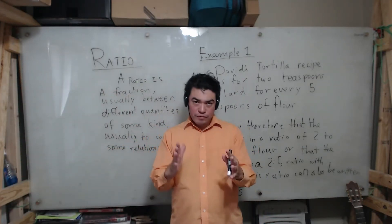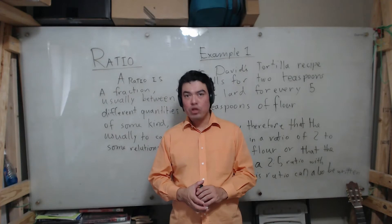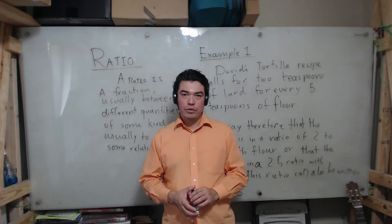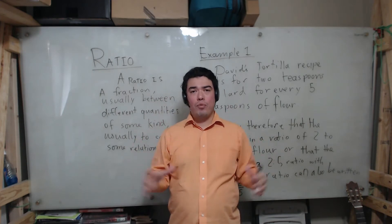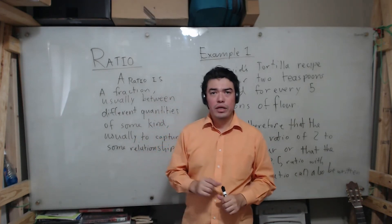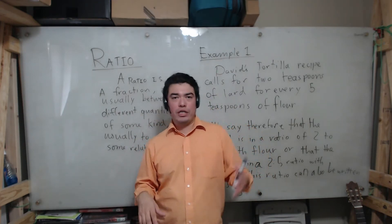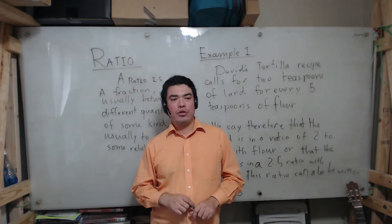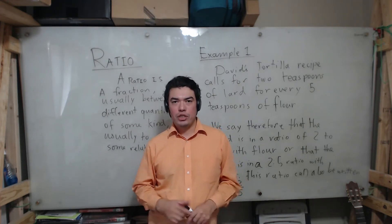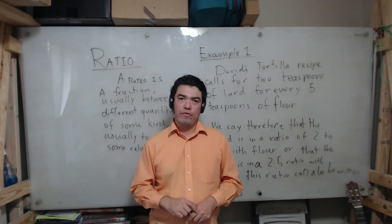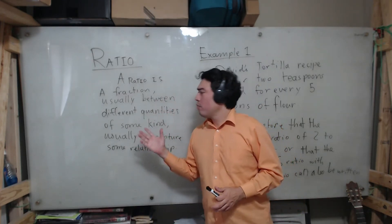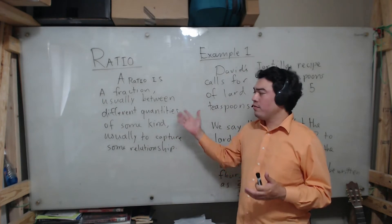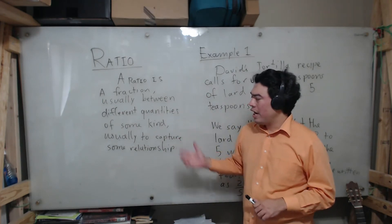Hello, this is going to be the first video lecture of our arithmetic reasoning course that deals with ratios. If you were to look up what a ratio is, you will often hear the idea a ratio is just a fraction. And you might wonder if a ratio is just a fraction, why do we have a new word for it? For us, a ratio is going to be a fraction, but it's usually going to have different quantities of some kind, and usually it's going to capture some relationship between these quantities.